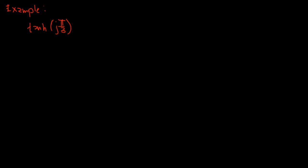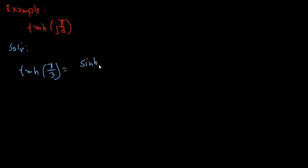So we will have here our solution. First we need to get the identity of this one. So hyperbolic tangent of j·π/3 will be equal to hyperbolic sine of j·π/3 — putting the j there — over hyperbolic cosine of j·π/3.